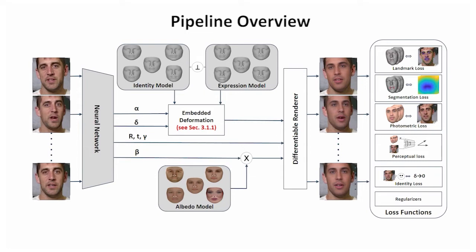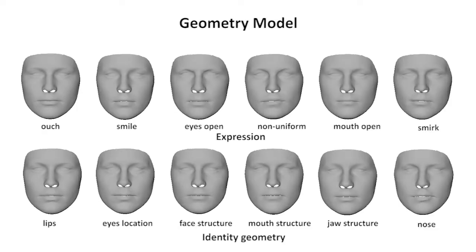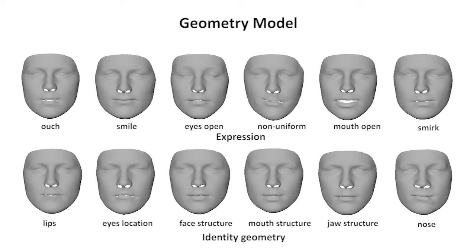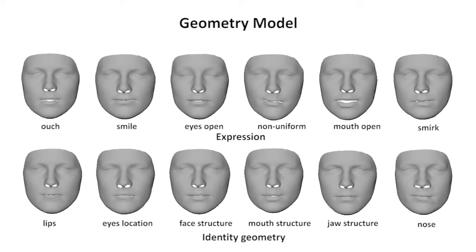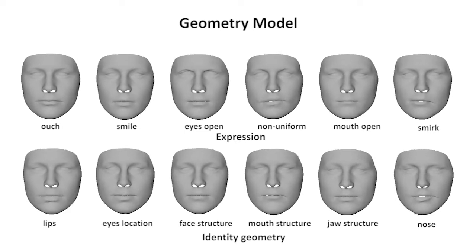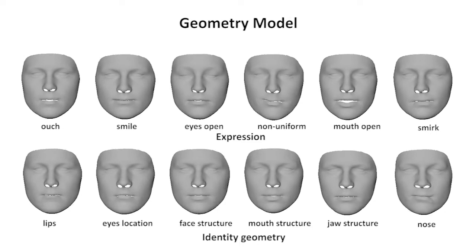We now visualize our learned models by showing its principal components. The identity geometry model captures the shape of different features such as mouth, eyes, and nose. It also captures the global face deformations.